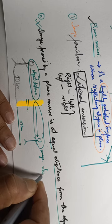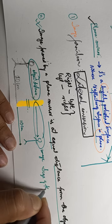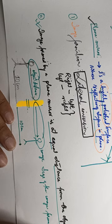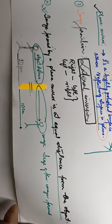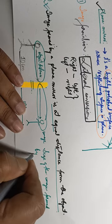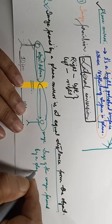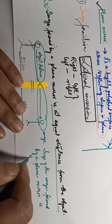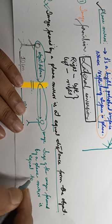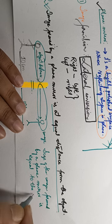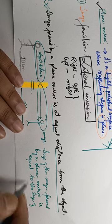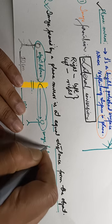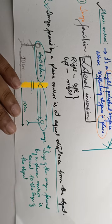Characteristic three: the size of the image formed by a plane mirror is equal to the size of the object. This is another very important characteristic to keep in mind.